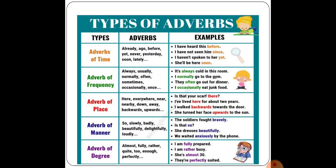Next, adverb of place. Words like here, everywhere, near, nearby, down, away tell us a place. Example: 'Is that your scarf there?' 'I have lived here for about two years.' Next, adverb of manner — words like slowly, badly, delightfully, loudly show adverb of manner. 'The soldiers fought bravely' — in what manner did they fight? They fought bravely. 'She dresses beautifully' — in what manner does she dress? She dresses beautifully.